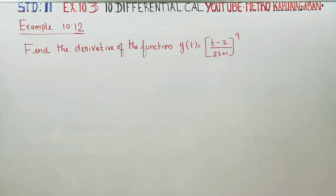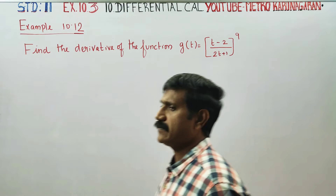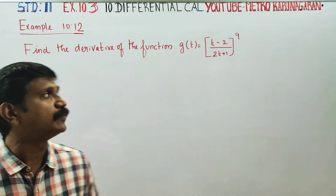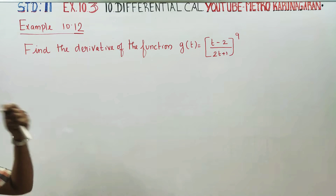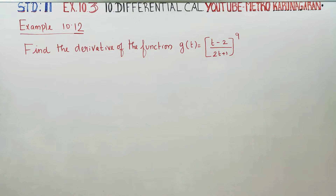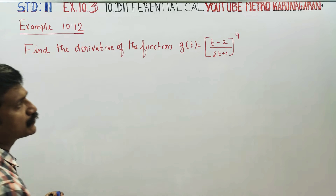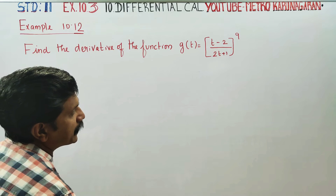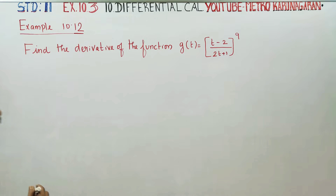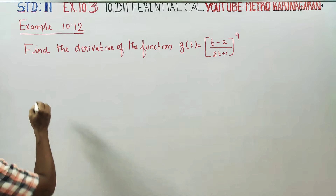Hello 11 standard students, I am Metro Karanagaran. In example 10.12, find the derivative of the function g of t is equal to t minus 2 by 2t plus 1, whole power 9.